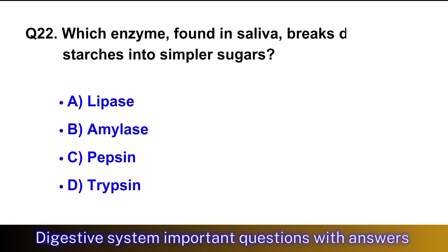Question No. 22: Which enzyme found in saliva breaks down starches into simpler sugars? The right option is option B, amylase.